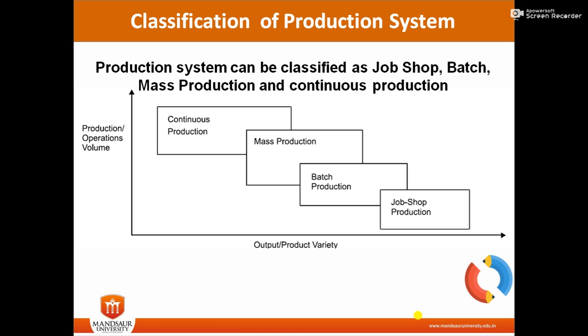In continuous production there is no variety — there is a single variety of product and we focus on the production of a continuous batch.